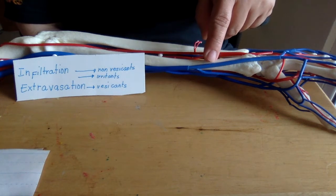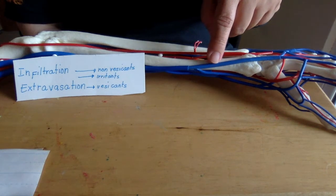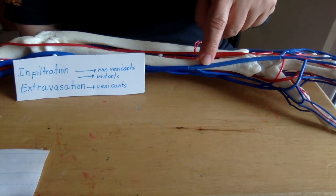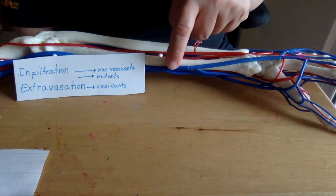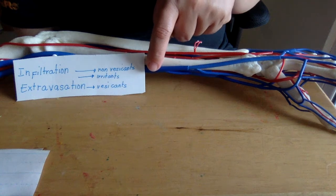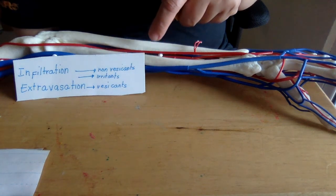For irritants, they can induce pain at the injection site or along the vein, with or without inflammatory reaction. Usually, they don't cause persistent tissue damage.